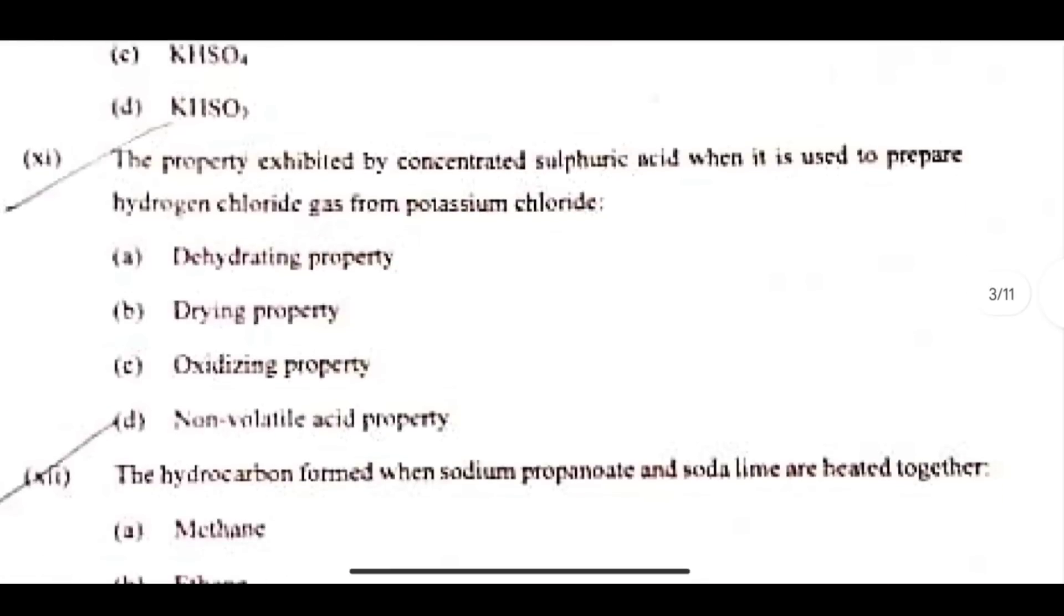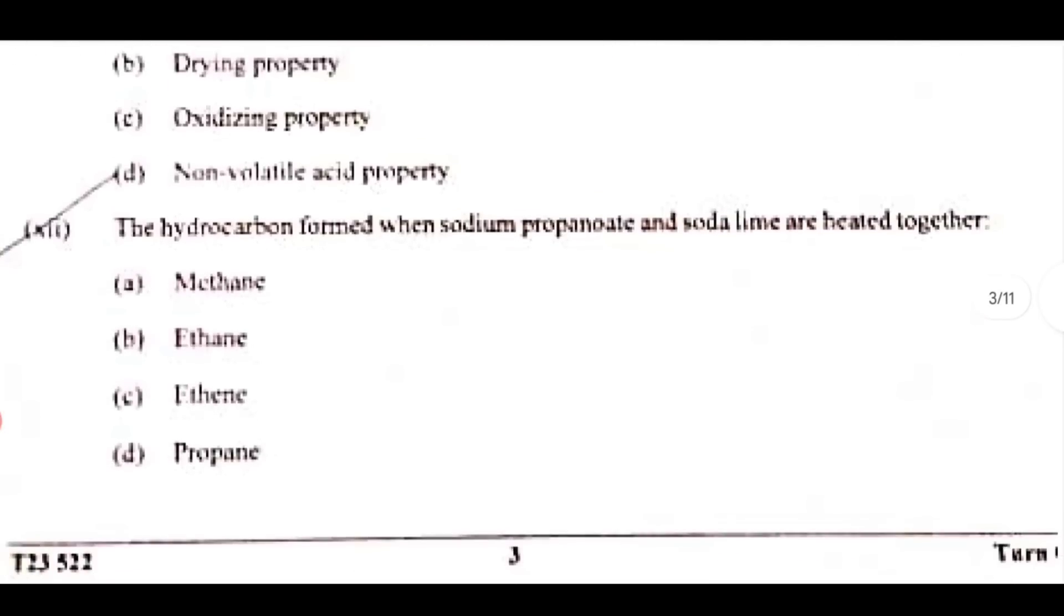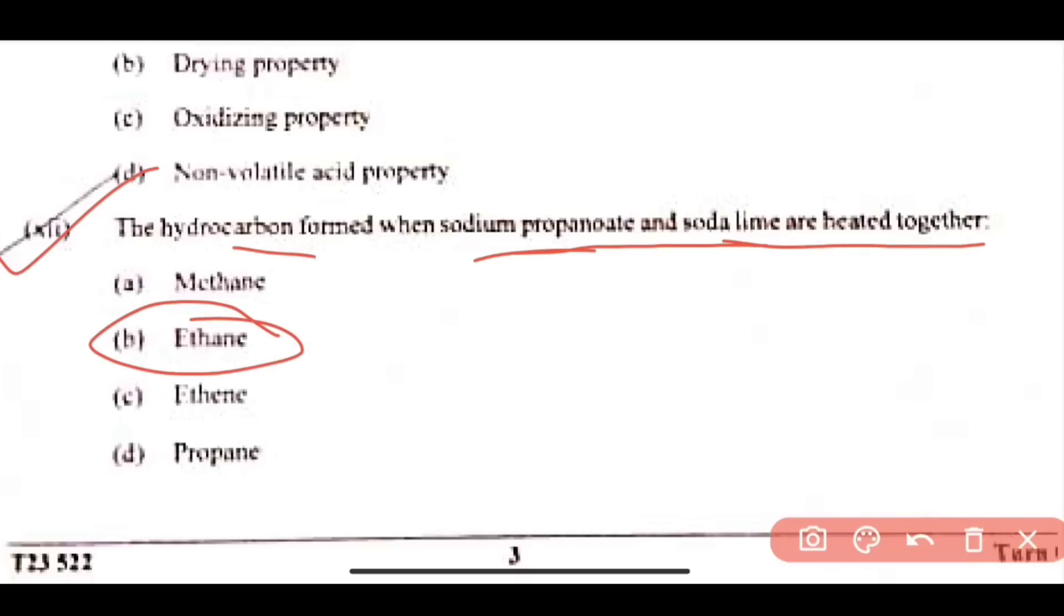Next is question number 11, 15 MCQs are total. The answer will be here, which property, it is the non-volatile acid property. So option number D is correct, for HCL. Next is question number 12, this is hydrocarbon which when sodium propionate formed, when sodium propionate and soda lime are heated together, it is ethane. So option number B is correct, ethane.